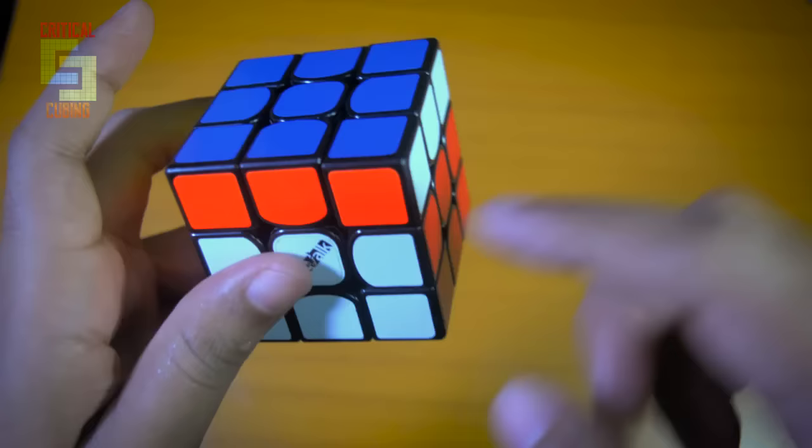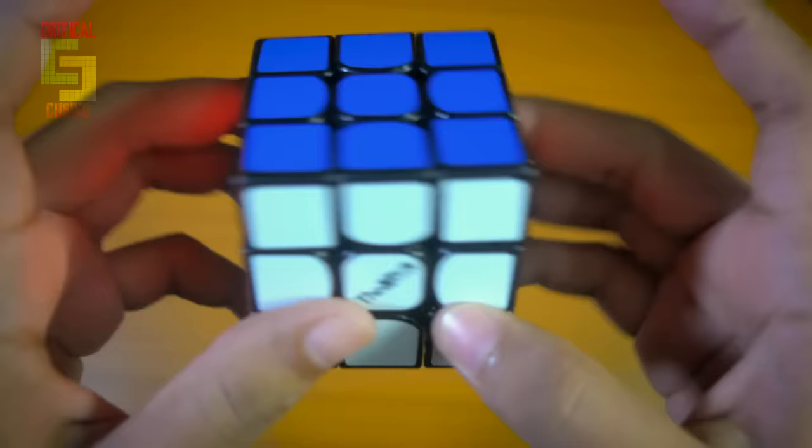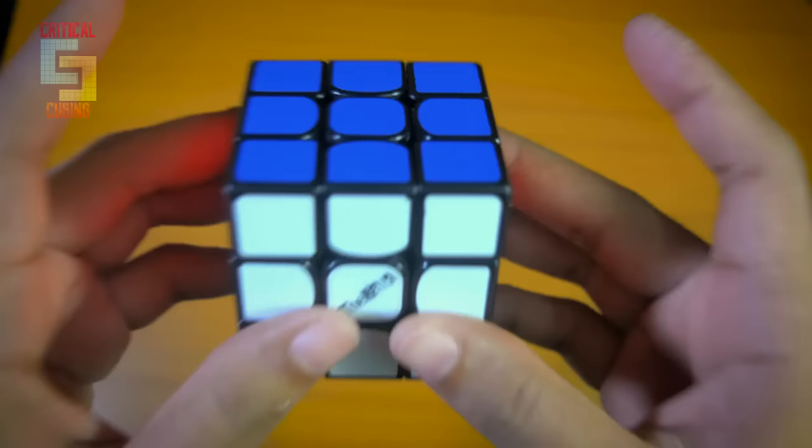The only thing that he needs to do now is the AUF, which is adjusting the U face. So he did a U move for matching the whites with whites, the oranges with oranges and the other colors. Doing the U move solved the cube for him and he could just stop the timer and get the world record of 4.7 seconds.